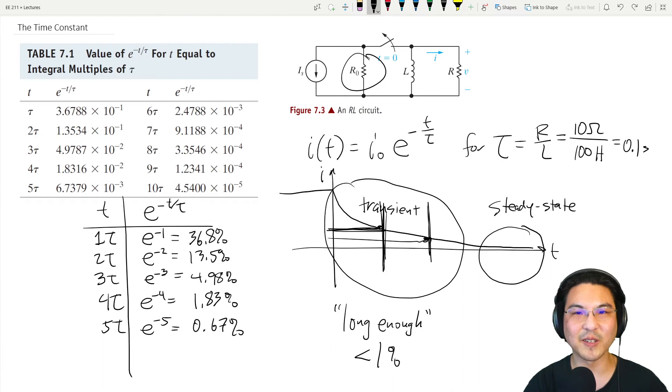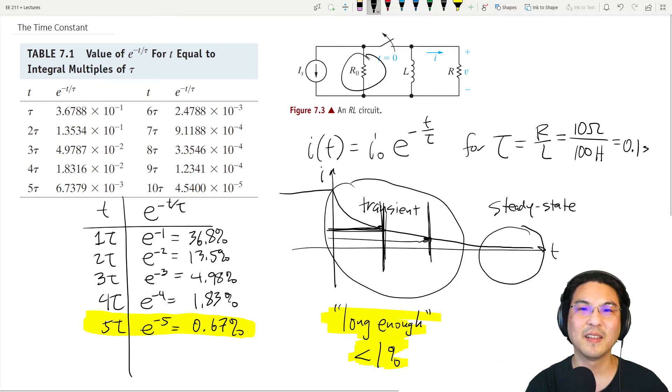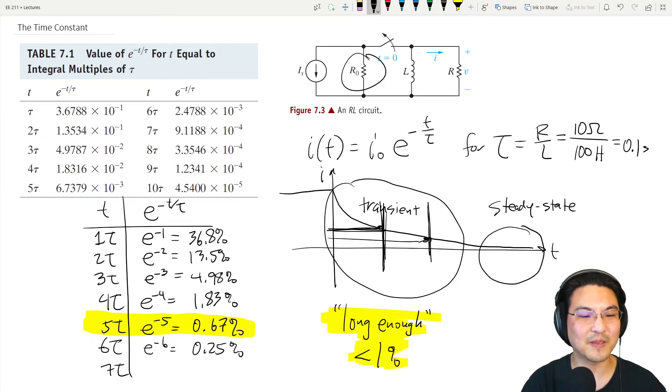This is the general consensus: if you wait five time constants, that gets you under one percent, and that would be considered long enough to wait—like a long time. But then let's say you wanted to wait a little bit more: six time constants would be 0.25 percent.